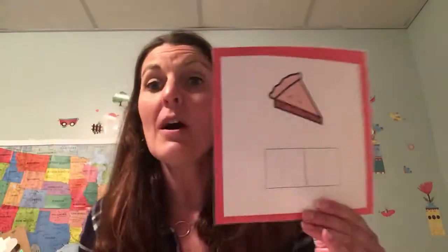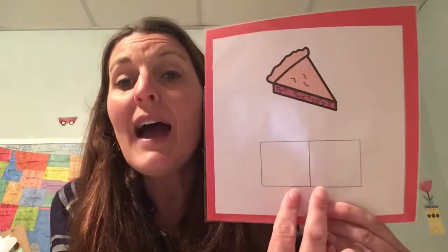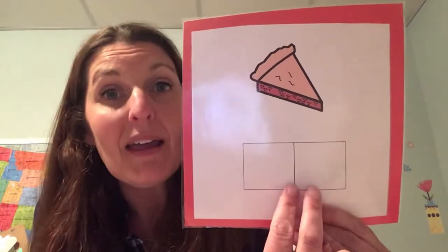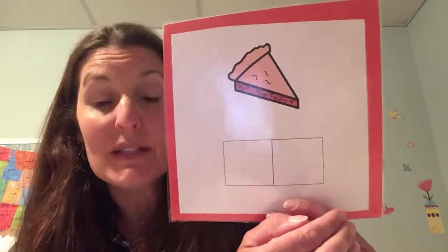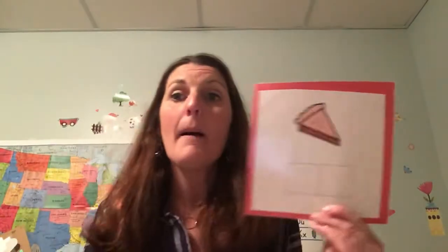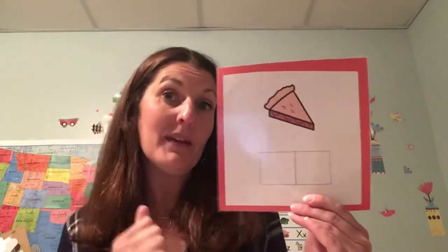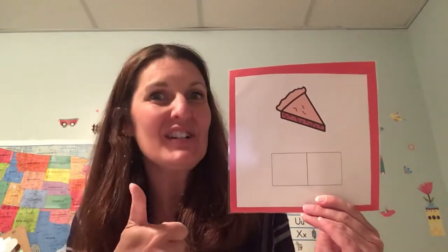This looks yummy. This is a piece of pie. And as you can see, I have two boxes underneath the pie. So that tells me there are two sounds in the word pie. And when we count them out, this is what it will look like: P, I, pie. So we tell what the two sounds are and we pull the word down. Can you do it with me? P, I, pie. Good job.